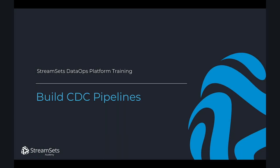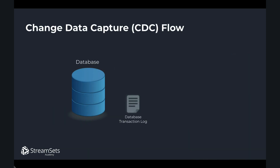In this lesson we're going to learn how to build CDC pipelines. Change data capture, or CDC, is the process of identifying and tracking changes to data in a system, typically a database. For most databases it's possible to enable data CRUD operations such as insert, update, and delete to be tracked into a transaction log or journal. As data operations are executed, a database system that has tracking enabled writes the operation type and the data that was involved in that operation to the transaction log.